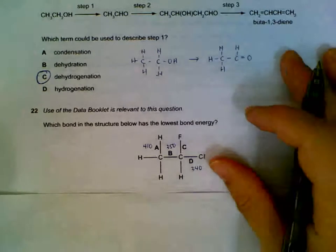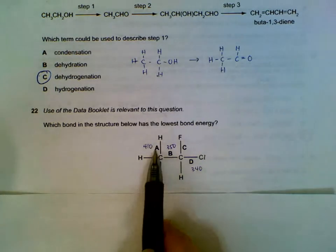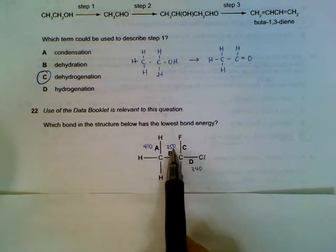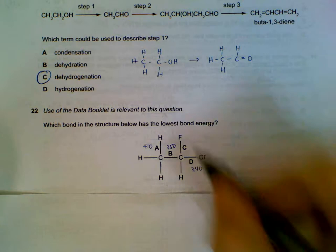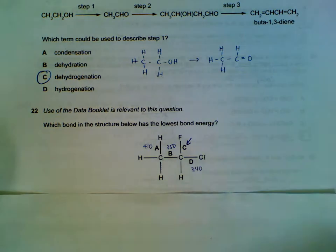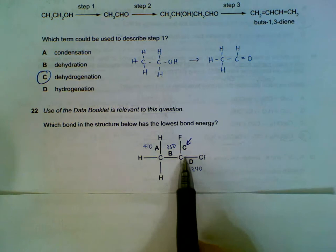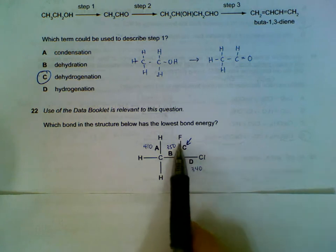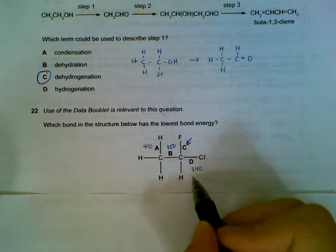Question 22: Referring to the data booklet for bond energies — 410, 350, and 340 kJ mol⁻¹. The C–Cl bond is easier to break than the C–F bond because C–F is a shorter, stronger bond. Therefore, C–Cl is the weakest of all.